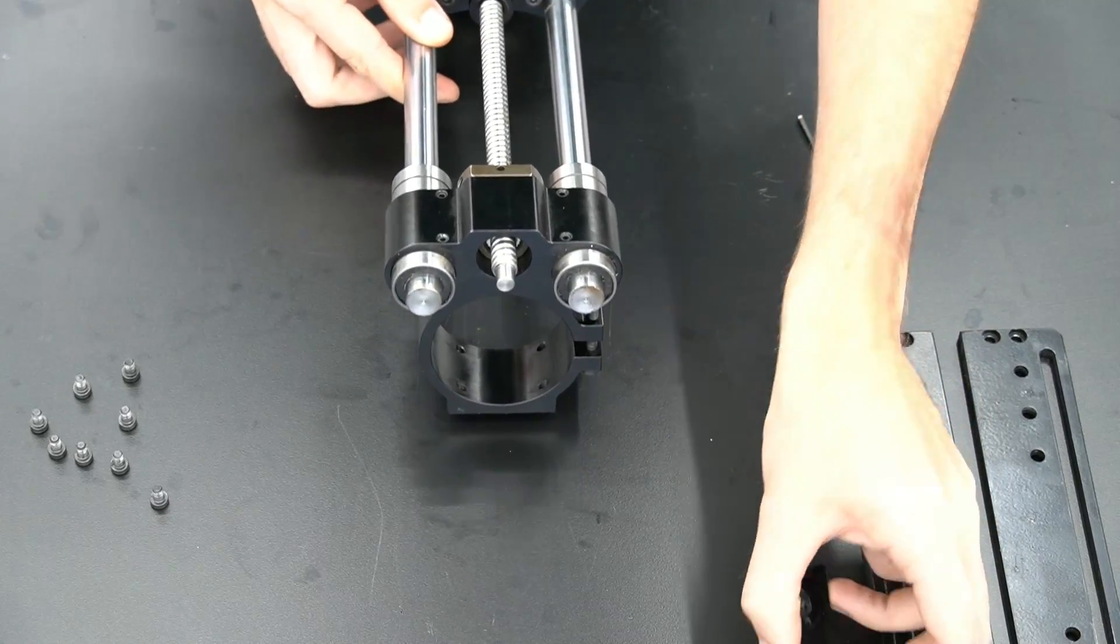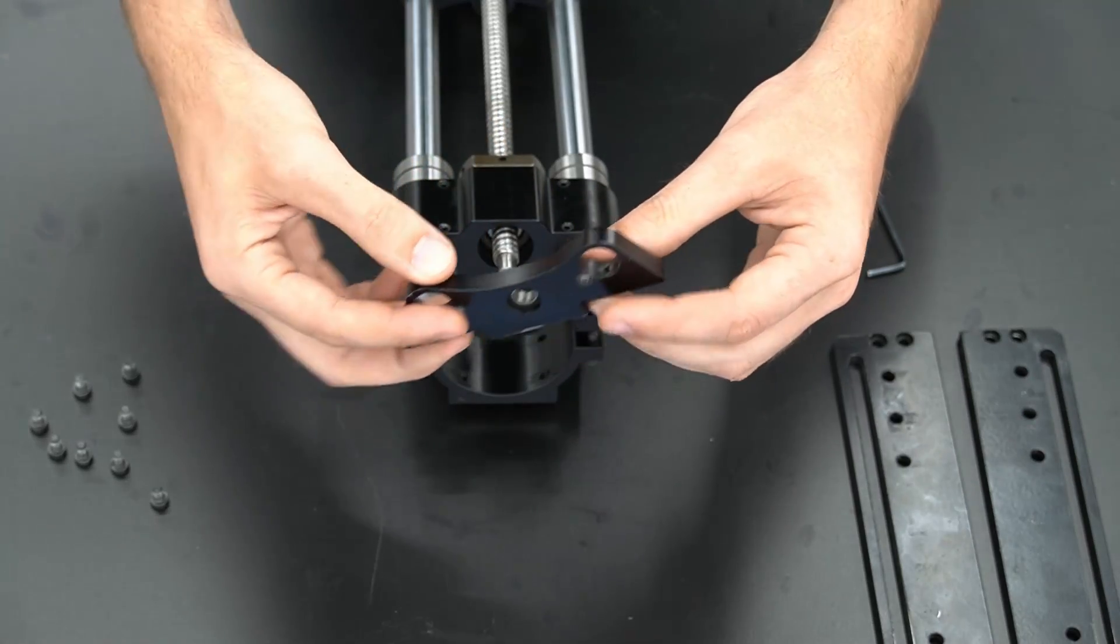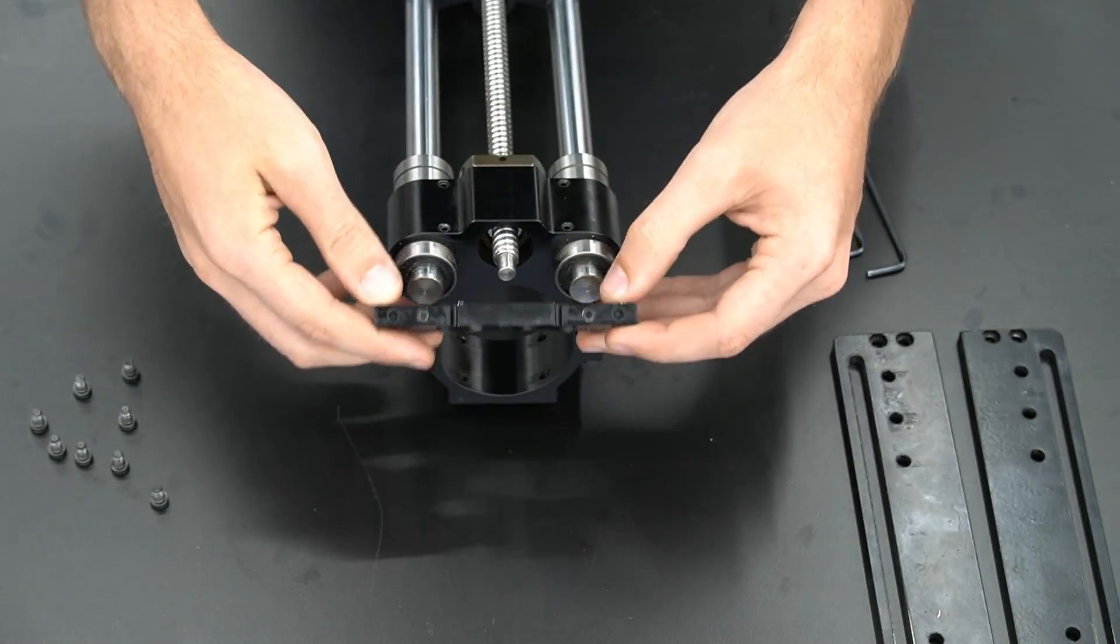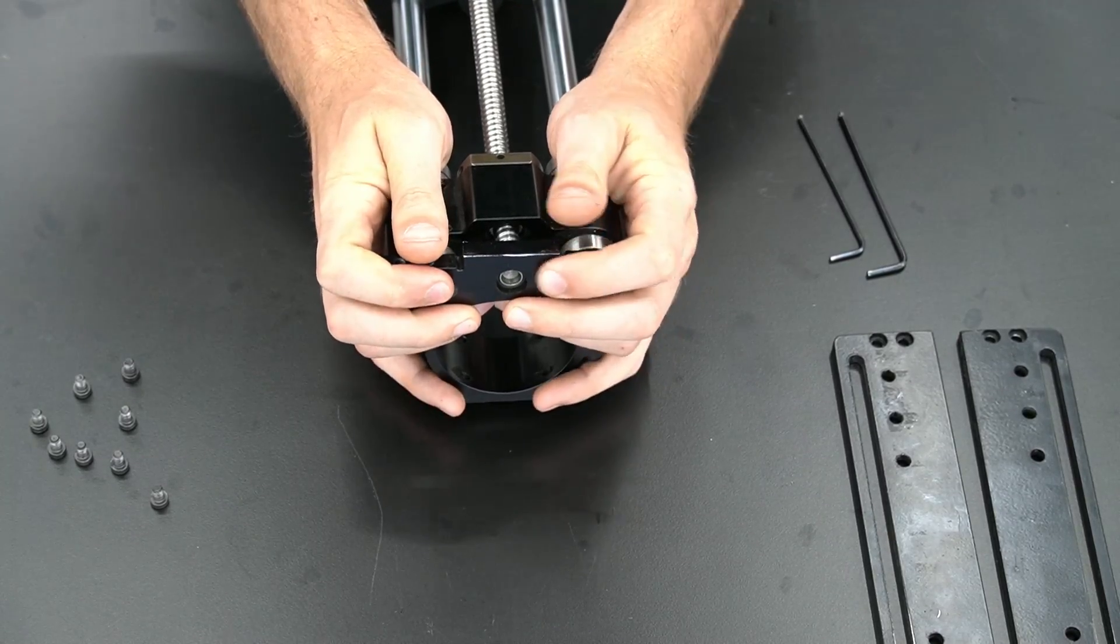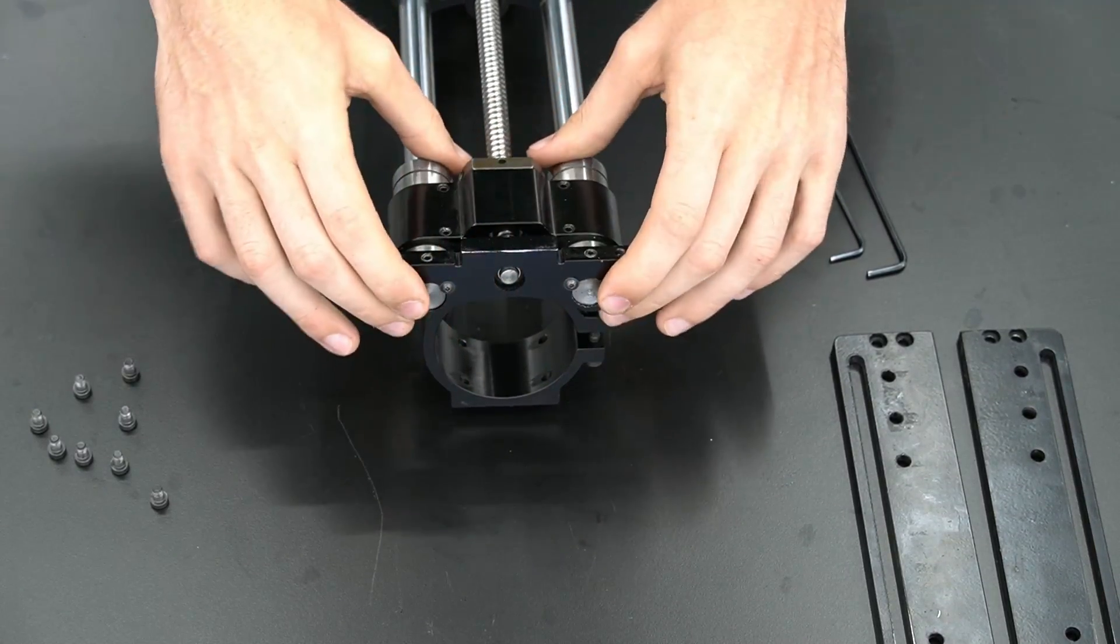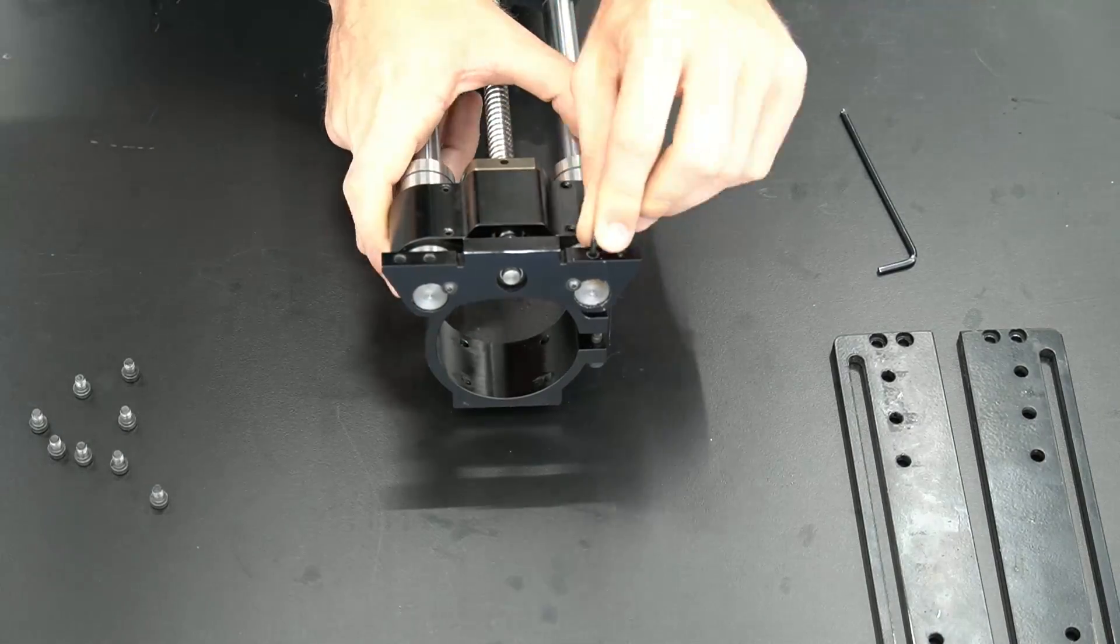With our spindle mount reinstalled, we can now attach the bottom bracket to the Z slider. Face the concave side of the bracket towards the front of the Z slider and slide it into place. Once it is slid all the way onto the Z slider, we can tighten down the set screws.